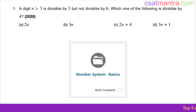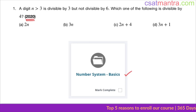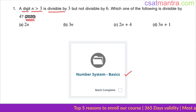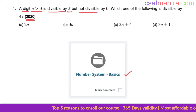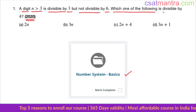This question is asked in 2020 based on number system basics — a very easy question. Let's solve this: n greater than 3 is divisible by 3 but not divisible by 6. Which one of the following is divisible by 4?